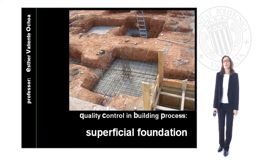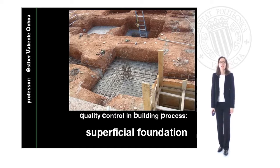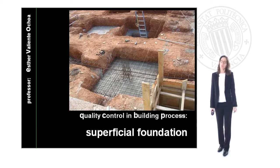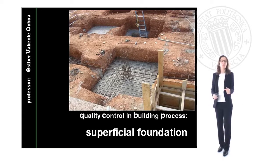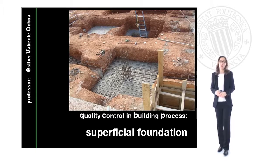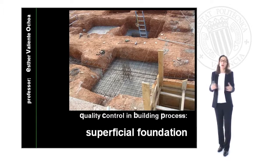Hello, we are going to see the quality control in the building process at superficial foundation. This unit is very important because it will support the rest of the structure of our building. This is the second unit in the quality control building process after the land work.